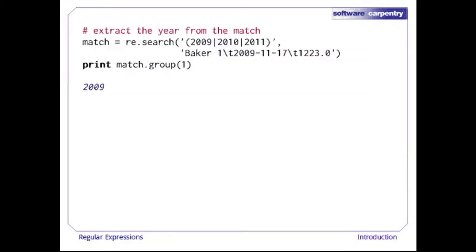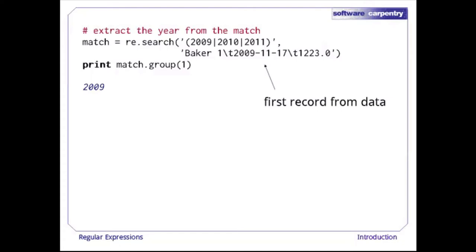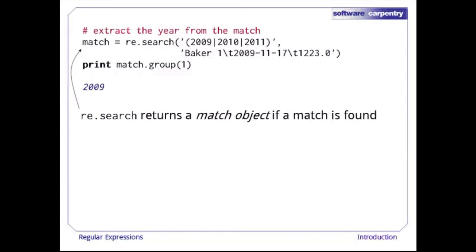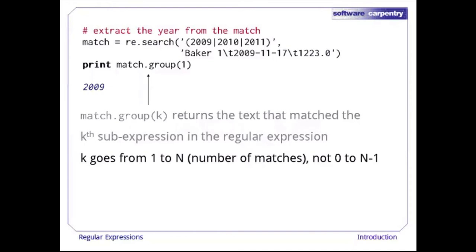Here is an example. The pattern to match years has been put in parentheses. This will match 2009, 2010, or 2011, and it will remember which of those it matched. When re.search is called, it returns a match object if a match is found, or None if there is no match. The expression match.group() returns the text that matched a particular parenthesized sub-expression. The first sub-expression is extracted with match.group(1), the second with match.group(2), and so forth — we count from 1 to n.